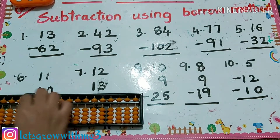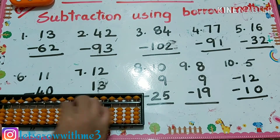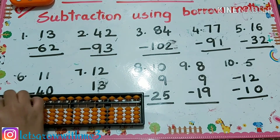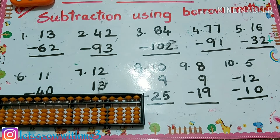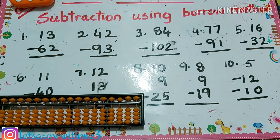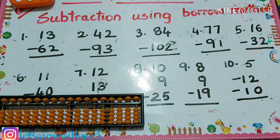All the examples here have the positive value less and the negative value having more quantity. Whenever you are doing subtraction with these types of examples, you have to find out the complement of your answer to get your actual answer. Let's see how we have to do the complement.